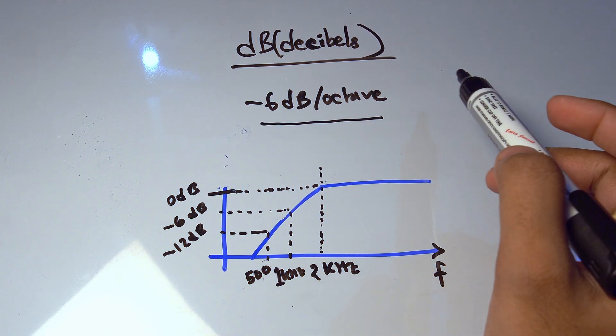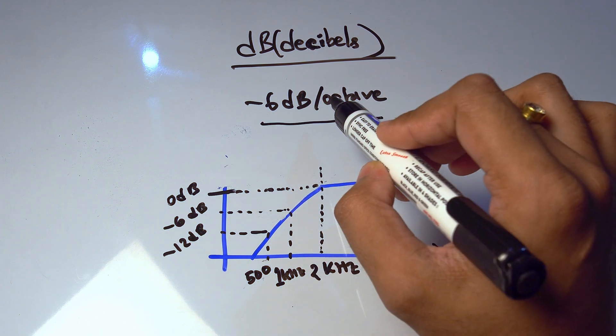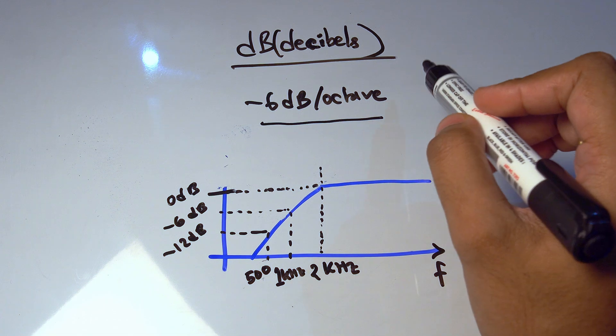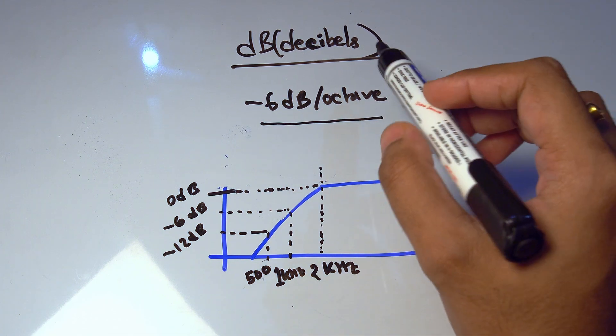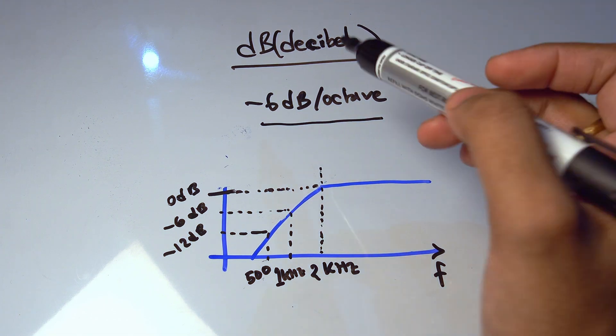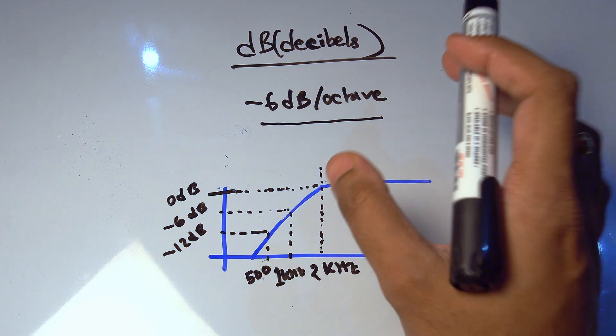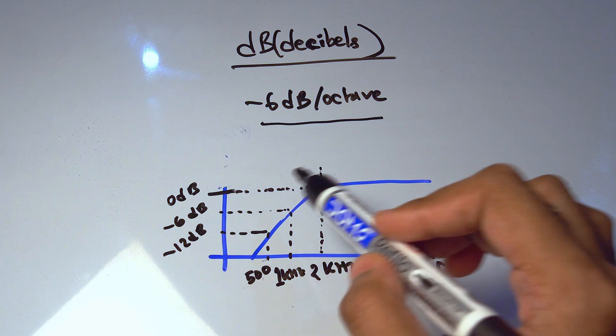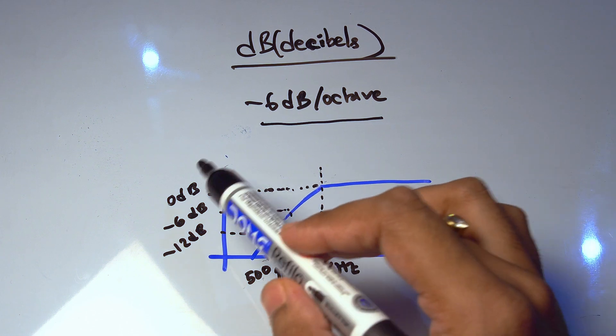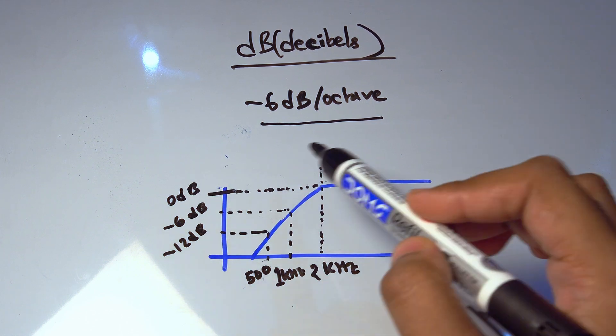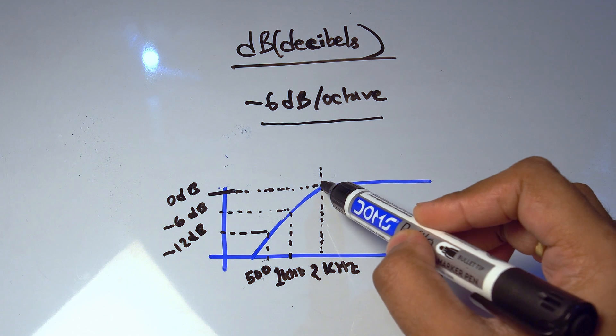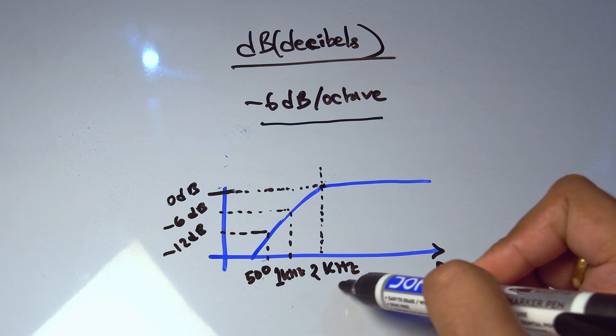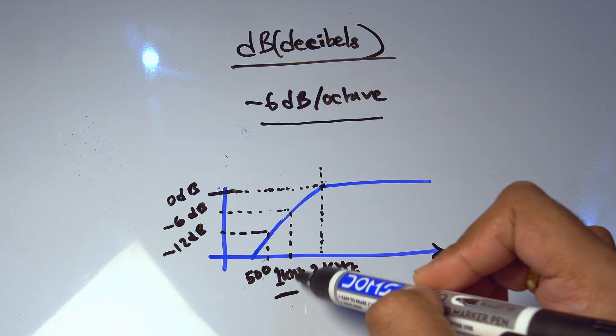So when I say my crossover is designed as minus 6dB per octave or it's a first order crossover—first order means minus 6dB, second order is minus 12dB, third order is minus 18dB. So like that, first order is minus 6dB. When I say my crossover or preamplifier is designed for minus 6dB per octave, what I mean is my amplifier reduces the amplitude of this signal to half of the value, to half of its value when it's beyond the cutoff frequency.